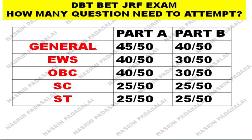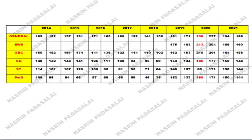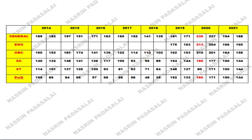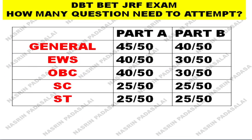Coming to the attempt targets: if you belong to the general category, with respect to Section A, out of 50 questions you need to attempt at least 45 questions. At the same time, you should keep negative marking in mind. I have previously made a video regarding the minimum marks you need to qualify, so please watch that video. In the examination hall, you should also think about negative marking. So 45 into 3 gives you 135 marks.